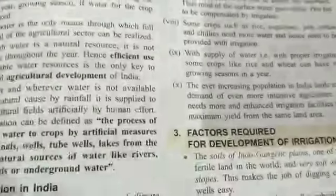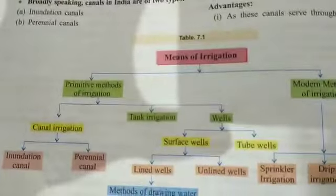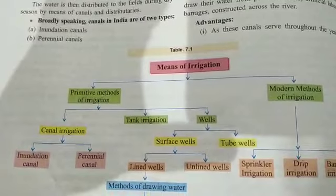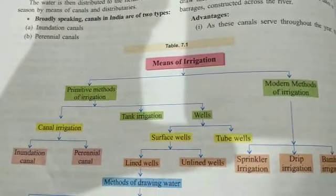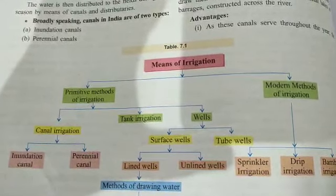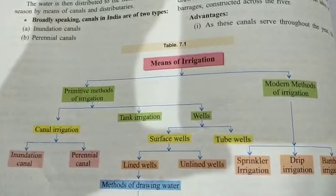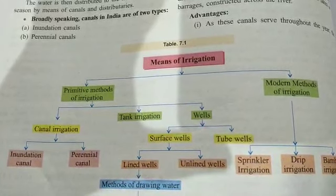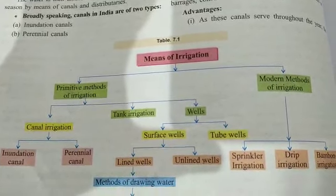There are various methods of irrigation, divided into two heads: primitive or traditional methods, and modern methods. Under the primitive or traditional method, we have well irrigation, tank irrigation, and canal irrigation. Under canal irrigation, there are two types: inundation canal and perennial canal.